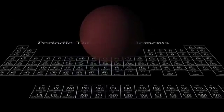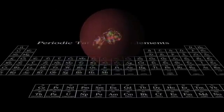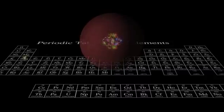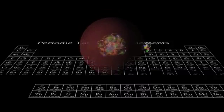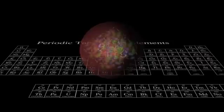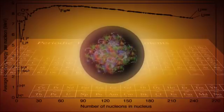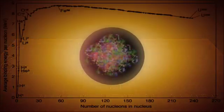So as we add nucleons and work our way up the chart of the periodic table, initially each nucleus is generally a little more tightly bound than the one before. This chart gives the actual numbers.